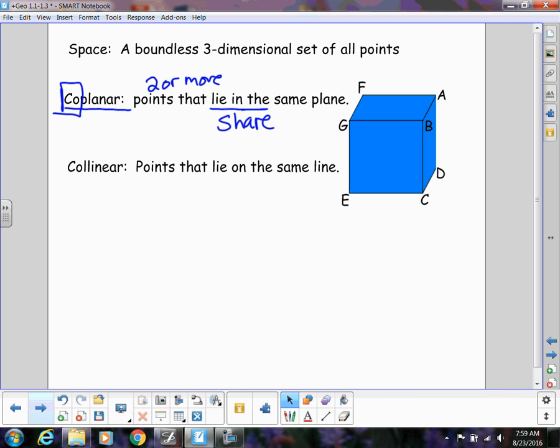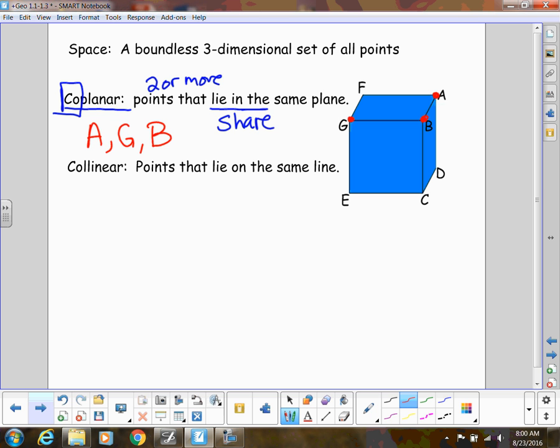So, for example, in this diagram, A and B and G are all on that top plane. A, G, and B are all in that top plane of that cube. In fact, so is F. So we could say all of those are coplanar. And there are several other ways, other points that are coplanar. I'm just giving you one example.